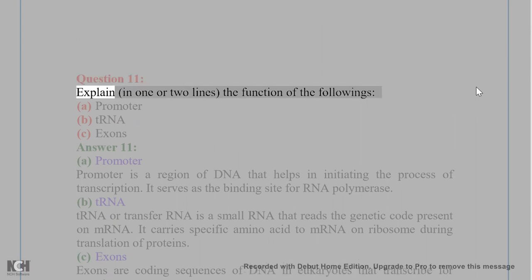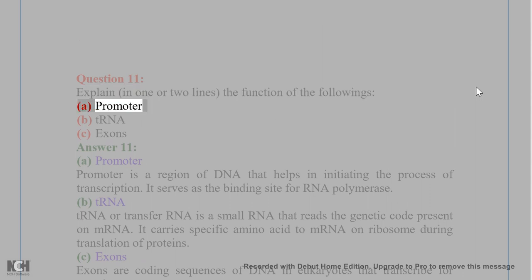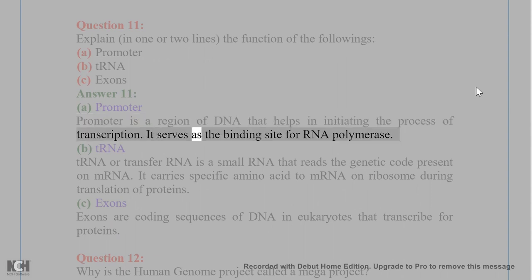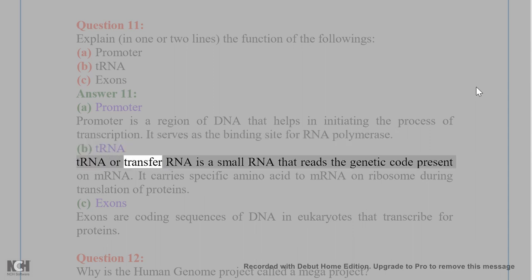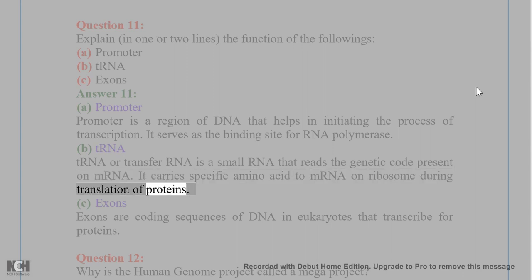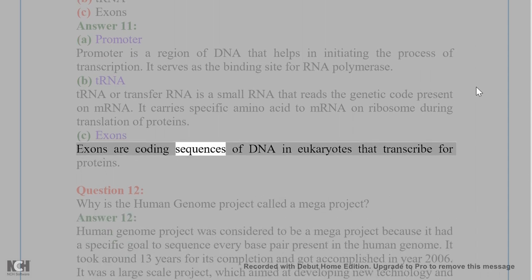Question 11. Explain, in one or two lines, the function of the following: a. Promoter, b. tRNA, c. Exons. Answer 11. a. Promoter: Promoter is a region of DNA that helps in initiating the process of transcription. It serves as the binding site for RNA polymerase. b. tRNA: tRNA or transfer RNA is a small RNA that reads the genetic code present on mRNA. It carries a specific amino acid to mRNA on the ribosome during translation of proteins. c. Exons: Exons are coding sequences of DNA in eukaryotes that transcribe for proteins.